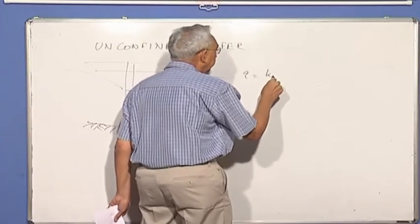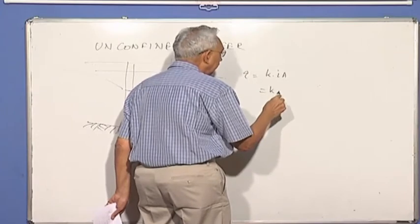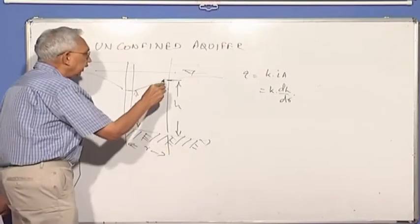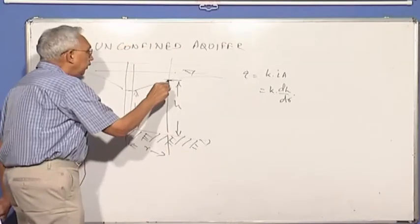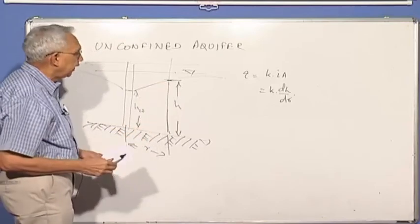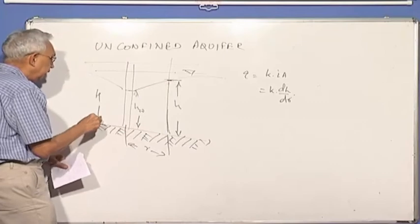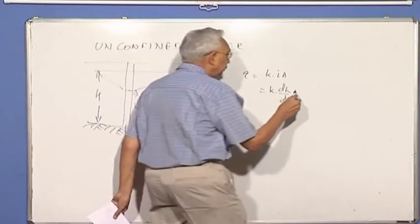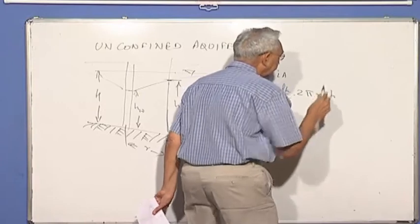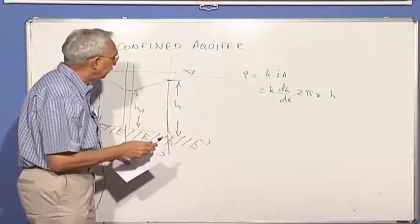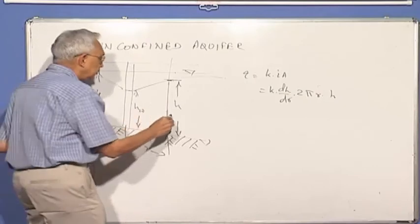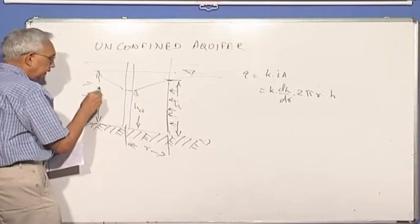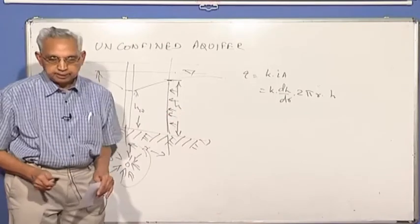So we again write the equation Q is equal to K I A. K, I is nothing but DH by DR. When it comes to A, now you realize, instead of the full aquifer, only the flow is taking place over a height H. The thickness of the aquifer can be high, but actual flow is taking place over the height H. So we say 2 pi R into H. So what you are now saying is the flow is through a cylinder, please remember, the flow is horizontal towards the center radially, or if I am looking at in plan, something like this.